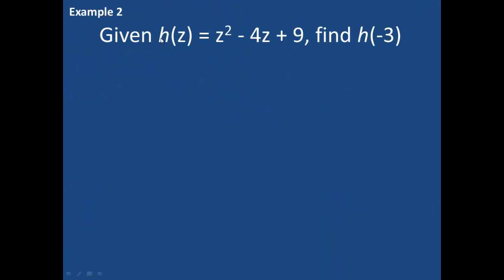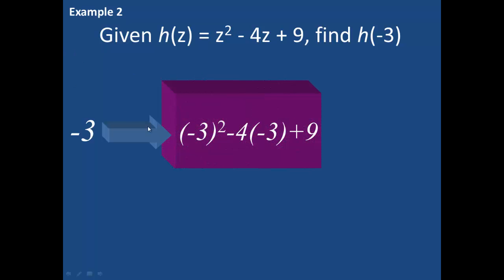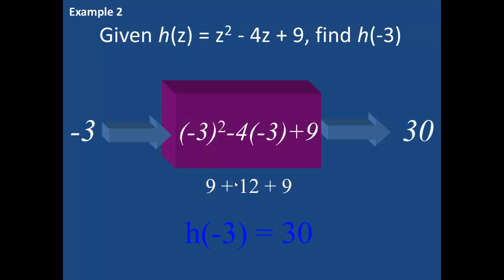If given the function h of z equals z squared minus 4z plus 9, and asked to find h of negative 3, I put negative 3 into the function: negative 3 squared minus 4 times negative 3 plus 9, which yields 9 plus 12 plus 9, which of course is 30. Therefore, h of negative 3 equals 30.